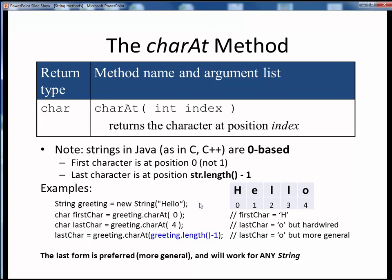So for example, let's say we set up this string using this declaration and instantiation statement. Then we can extract the first character of the string with this expression, and the last character of the string using this expression. Now this is okay, and it gives us the correct result, but notice that it's hardwired for a string of length five.